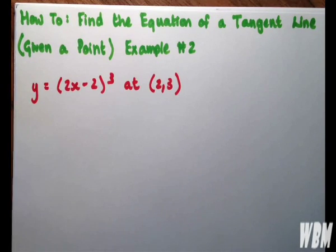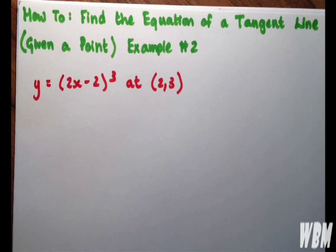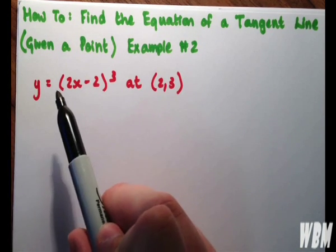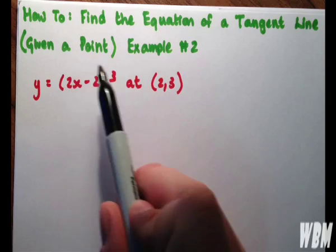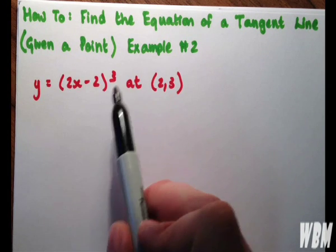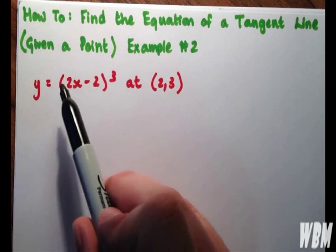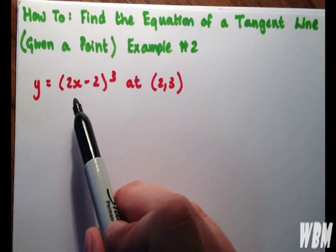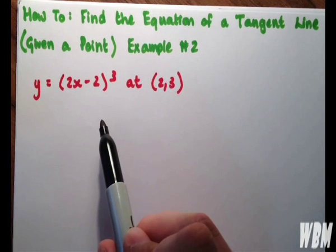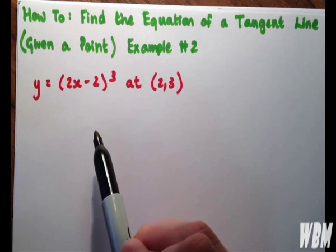Welcome to part 2 of finding the equation of a tangent line given a point. This is the second example. This is slightly more difficult because we have a slightly more complicated function which we will have to differentiate when it comes to finding out the gradient.